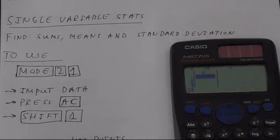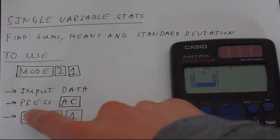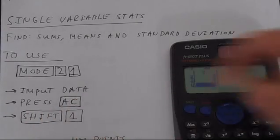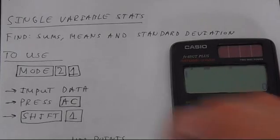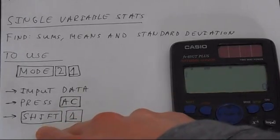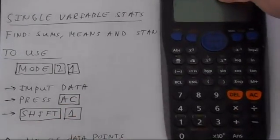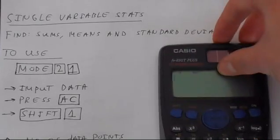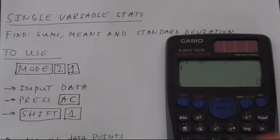So we'll just enter some numbers, say 1, 2, 3 in X. And then to save this we press AC. This is important. AC saves that. Now we need to get back into the statistics menu. So you'll notice on the number 1 you've got stat. Maybe you can't see that. But shift 1 puts you back into the stats menu.